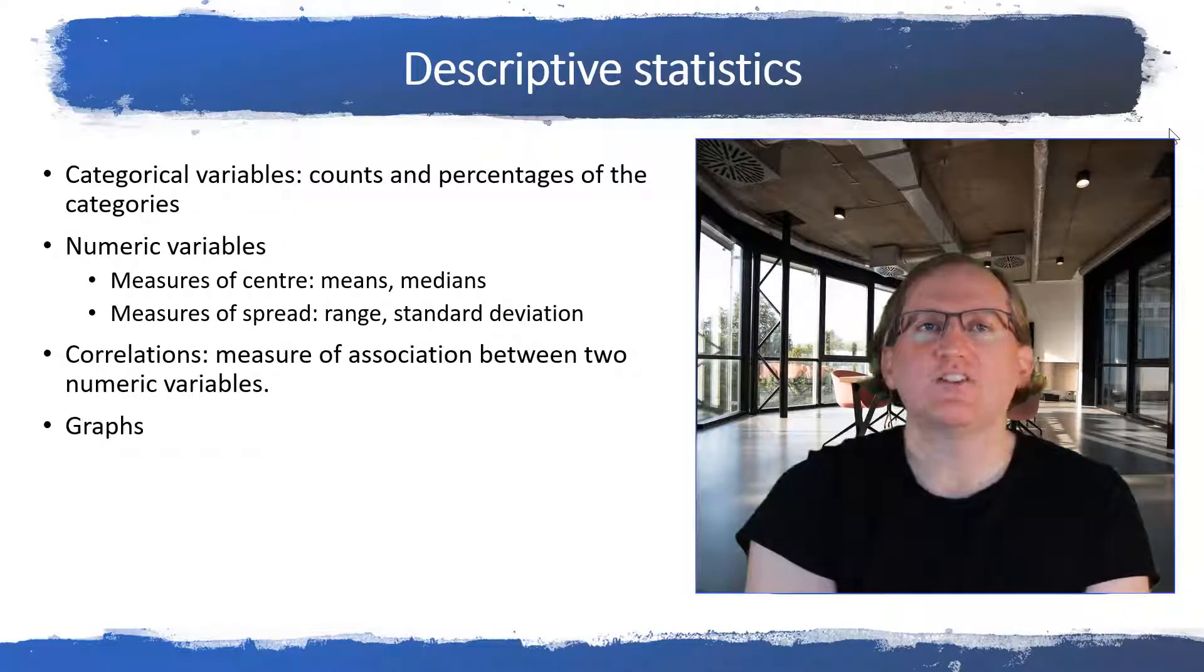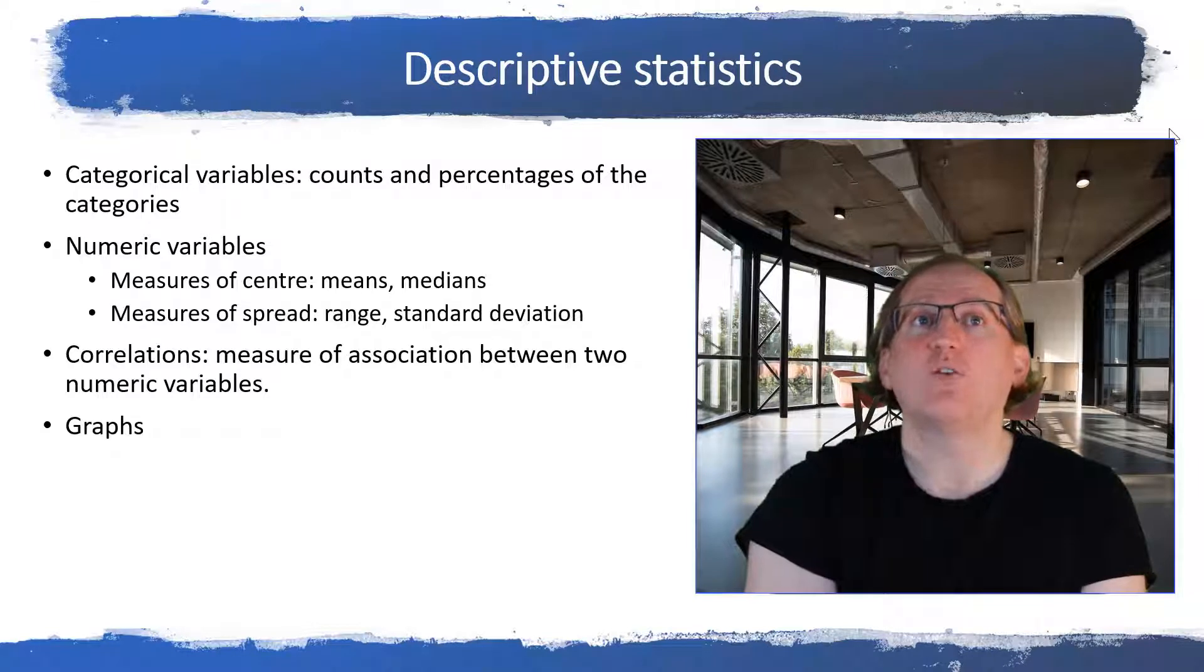So when we look at descriptive statistics, really this is just telling us about the data. So the different variables that have been collected, what do we see here? With our categorical variables, it will normally just say what are the different categories? And what are the counts or what are the percentages for those different categories? For a numeric variable, so something that is measured with a number, we would expect to see some sort of measures of center. So these would be things like means and medians. So for instance, if we were collecting the ages of all of the participants in a piece of research, what's the average age? What's the average income? So the means and medians will tell us about that.